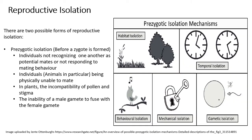Now that we've spoken about allopatric speciation — which results from geographic isolation — and sympatric speciation — which results in different species or alleles evolving within a population without a geographic barrier — we can also talk about reproductive isolation and how this might prevent the formation of certain new species. There are two types: pre-zygotic isolation and post-zygotic isolation.